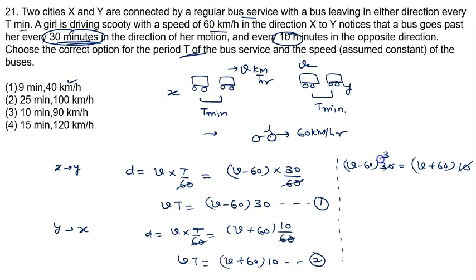Divide by 10, you get 3v minus 180 is given by v plus 60. Further you will write 3v minus 180 is given by v plus 60. 3v minus v is 2v is given by 240. The value of v is 240 by 2, it is given by 120 km per hour.